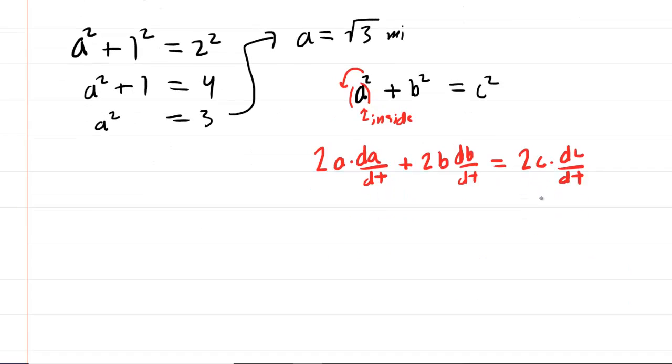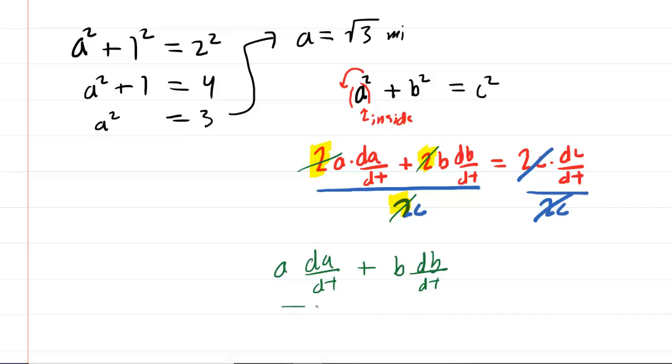To solve this equation for dc/dt, we would divide every term here by 2C. So these two C's would cancel. If you look very carefully, you will see that because each of the terms has a 2, when we divide by 2, it's actually going to cancel out.